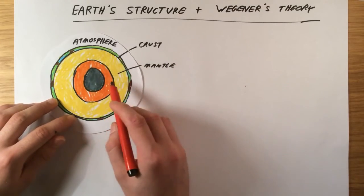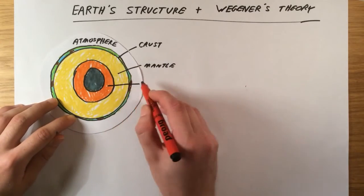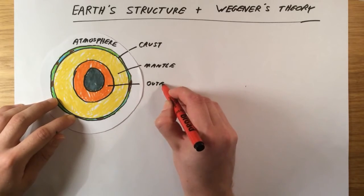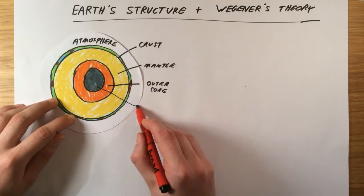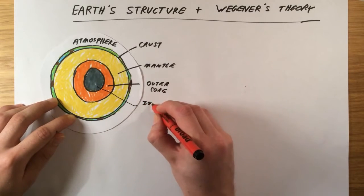In the center of the Earth we've got the core. There are two sections of this: the outer core is actually a liquid made of nickel and iron. And because the pressure is so great, even though the inner core is even hotter, it's actually a solid.